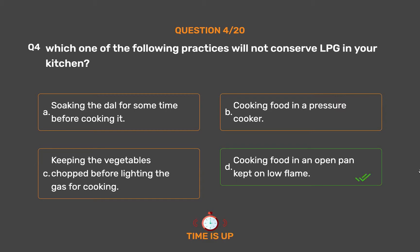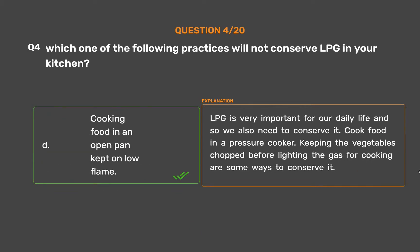The correct answer is Option D: Cooking food in an open pan kept on low flame. LPG is very important for our daily life and we need to conserve it. Cooking food in a pressure cooker and keeping vegetables chopped before lighting the gas are some ways to conserve it.